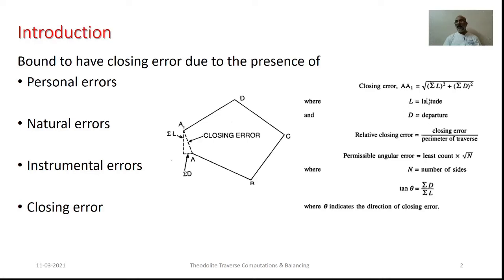As we have the values of sigmaD as well as sigmaL, its direction can be worked out as sigmaD divided by sigmaL. As we compute this particular closing error, we can check whether it is within the permissible limits by making use of this expression: least count times square root of n, where n is the number of sides. For different categories of traverses, permissible limits vary accordingly.